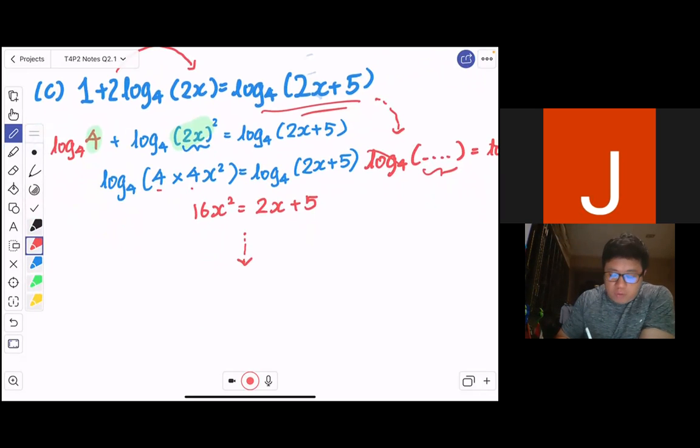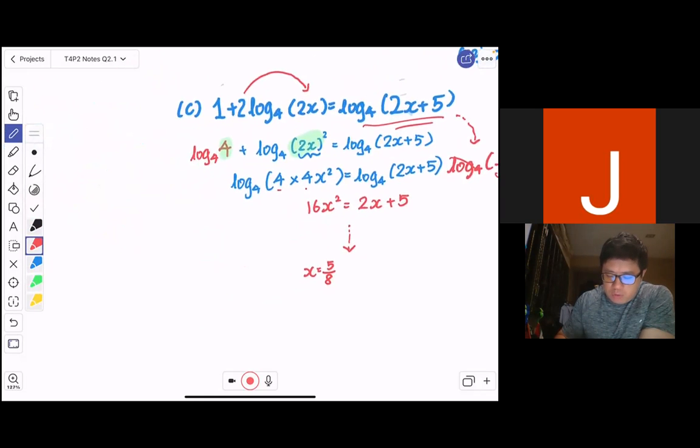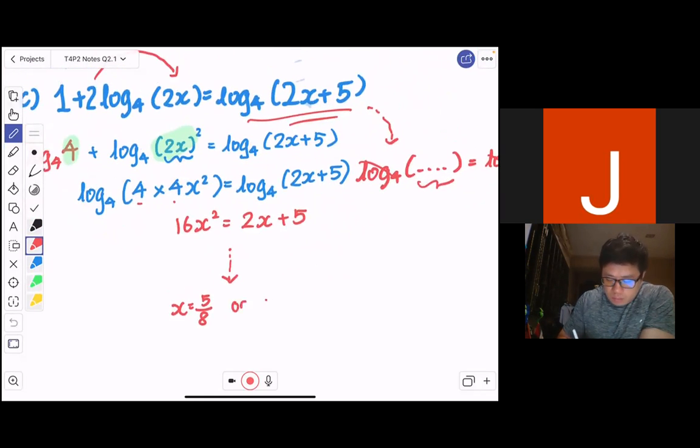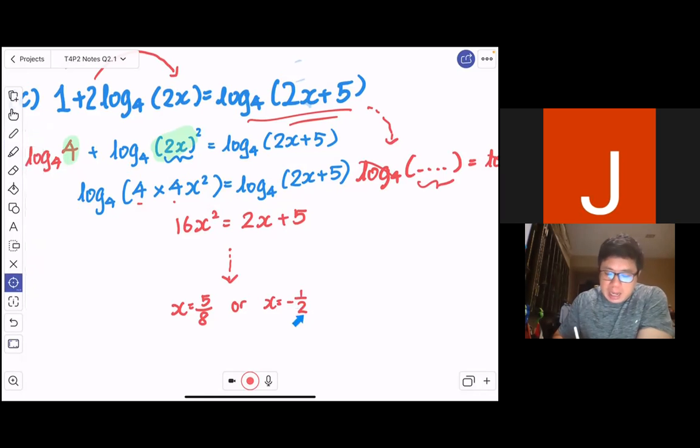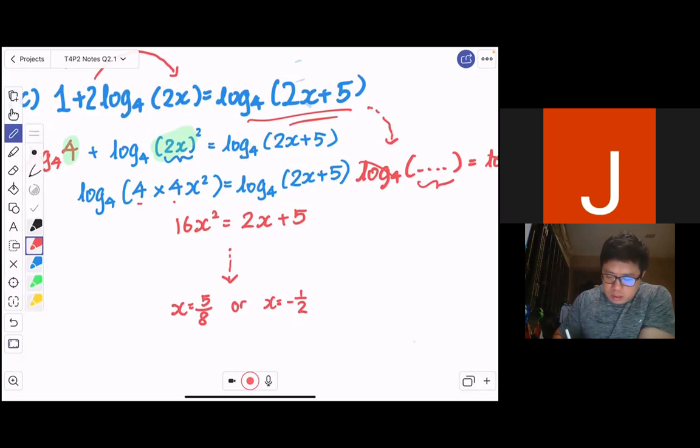Because solving quadratic equation should be your forte. And I have x = 5/8. You should get x = 5/8 or x = -1/2. Which again, you must recall like part (b). Check the validity of your answers. Do they violate anything? Now if x equals to minus half, it will violate the fact that log base 4 of 2x says that 2x has to be positive. So because it has to be positive, you have to reject x equals to negative half.